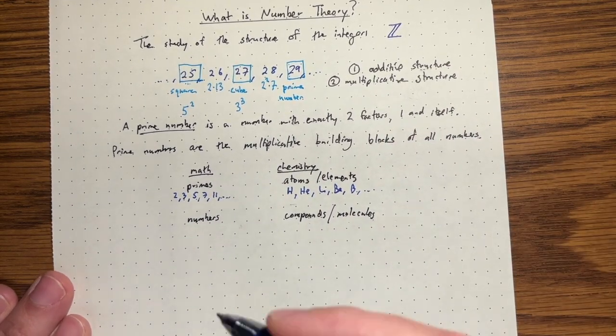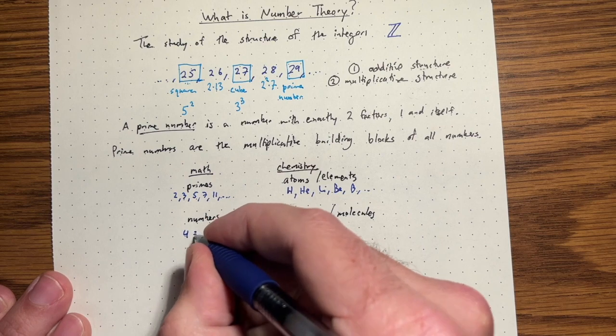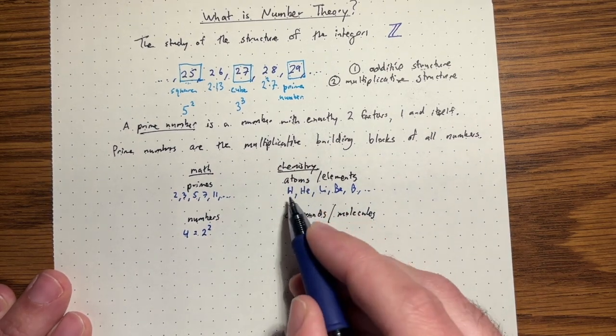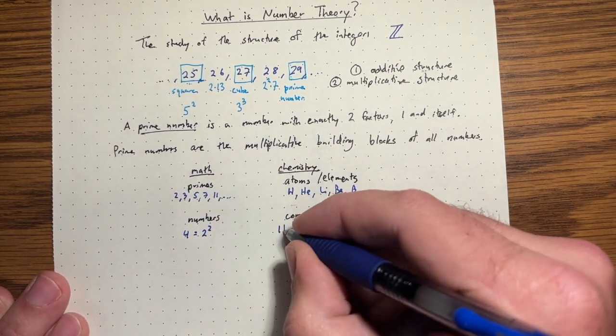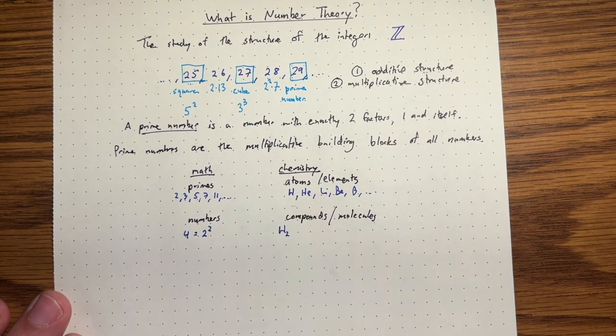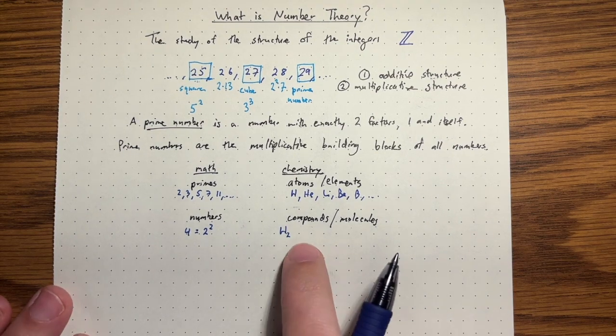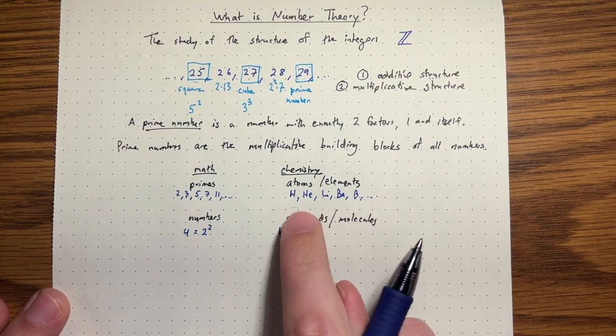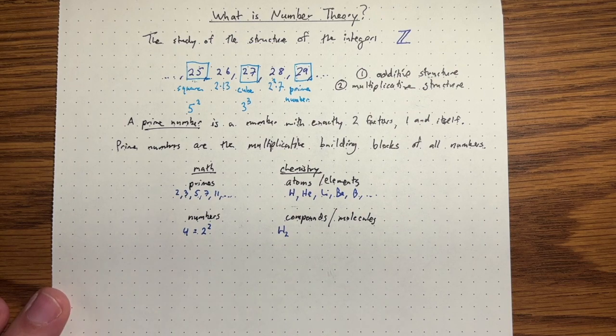So for example, number 4, it's like 2 squared. That's almost like the molecule H2, hydrogen gas, is made up of two hydrogens. And anything that we see around us is made up of atoms, just various combinations of these basic building blocks. Numbers are the same way.